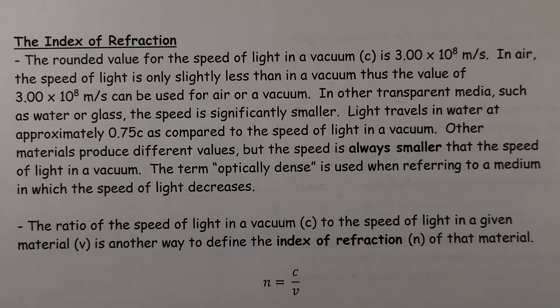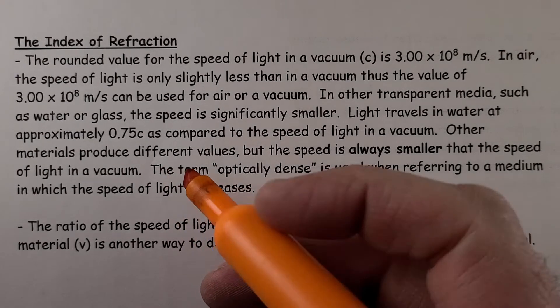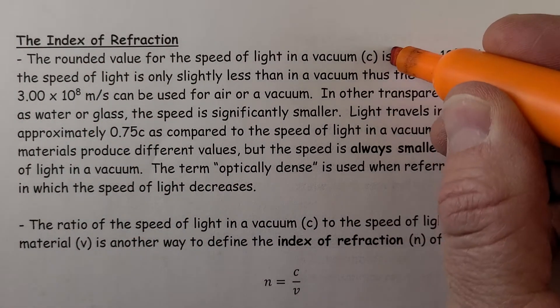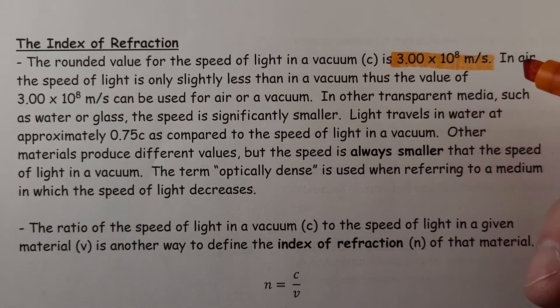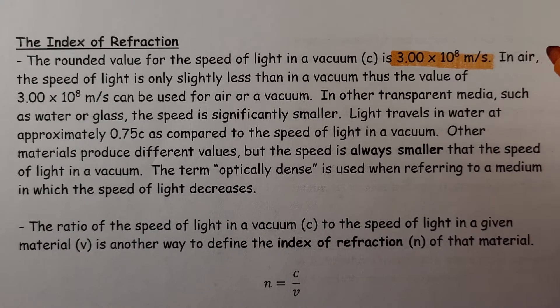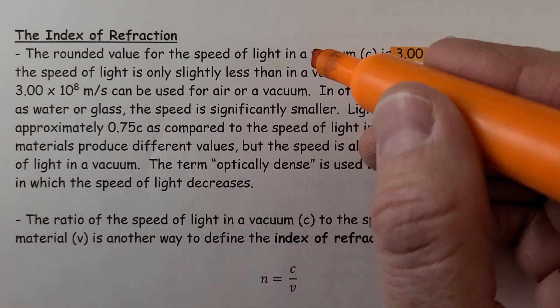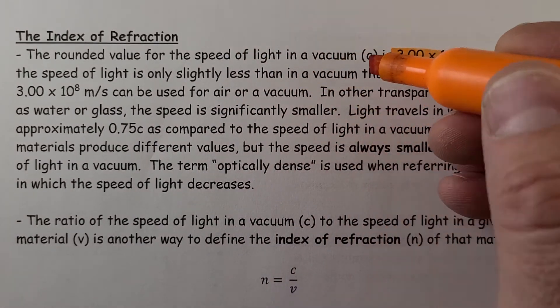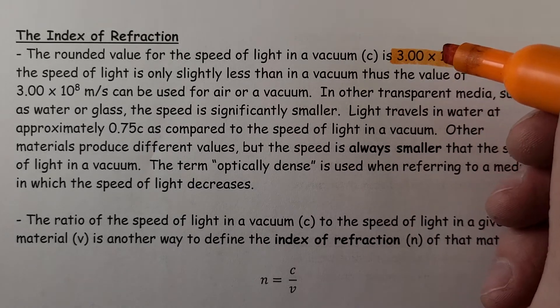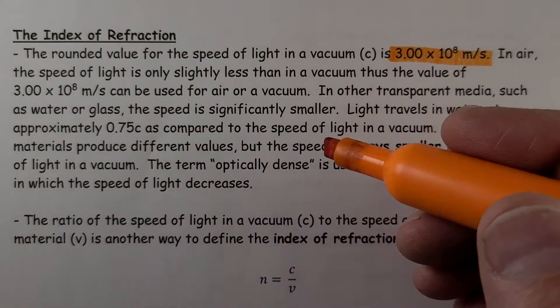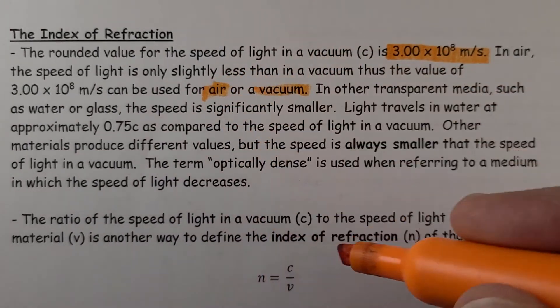At the start, we're going to be talking about the speed of light. The rounded value for the speed of light in a vacuum, which is an area that has absolutely nothing in it, no air molecules or anything, is 3.00 times 10 to the 8 meters per second. In air, the speed of light is slightly less because you have molecules of air. But for our intent and purpose, we'll assume that we're working with a vacuum for air or vacuum, because it's slightly less.